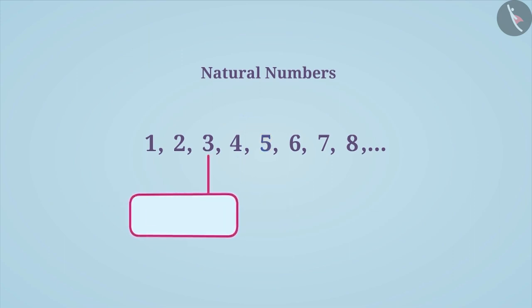But if 1 is subtracted from any natural number, then we get the natural number which comes before it, which is called its predecessor. For example, predecessor of 3 is 2 and predecessor of 2 is 1. Can you tell what will be the predecessor of 1? Think about it.